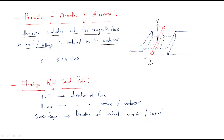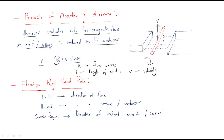The induced voltage value is represented as e = BLV sinθ, where B is the flux density, L is the length of the conductor, V is the velocity of the conductor, and θ is the angle between the flux and the conductor. By using this phenomenon, the synchronous generator works.